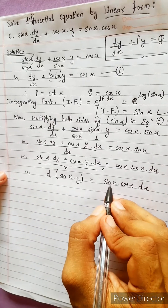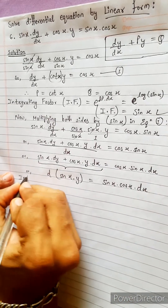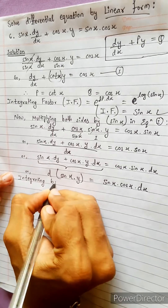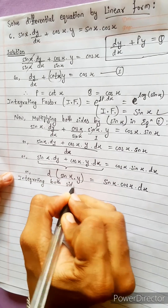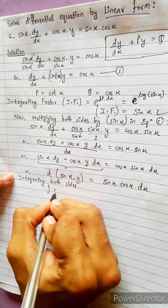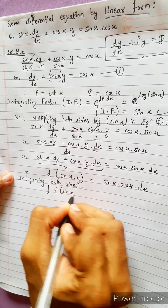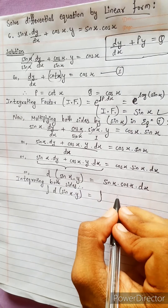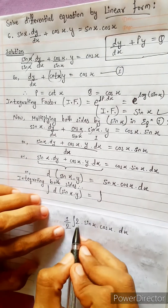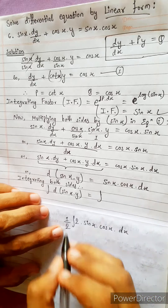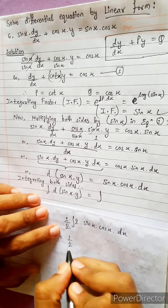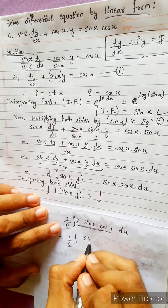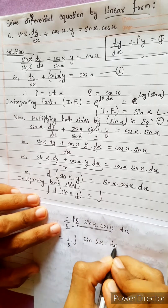Now integrate this line — integrating both sides. We get: integration of d(sin x · y) equals integration of sin x·cos x·dx. Now this integration uses the formula: sin x·cos x equals (1/2)·sin 2x. So 2 and 2 cancel, giving integration of (1/2)·sin 2x·dx.